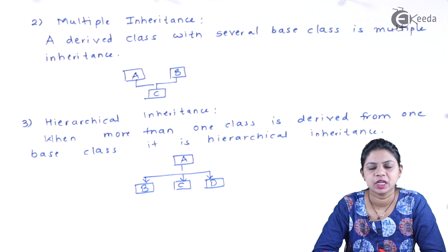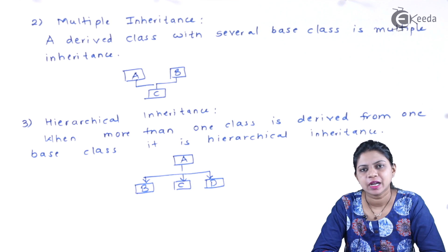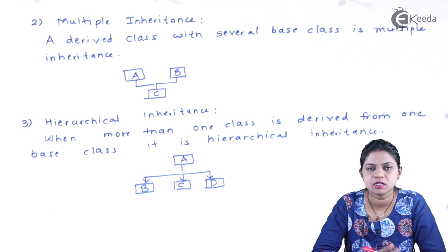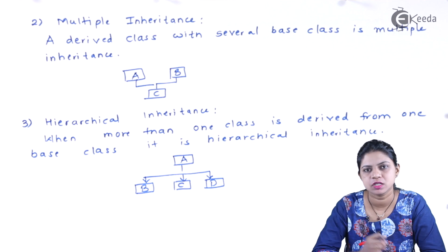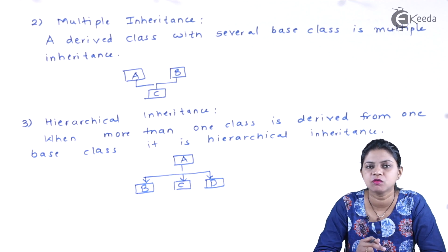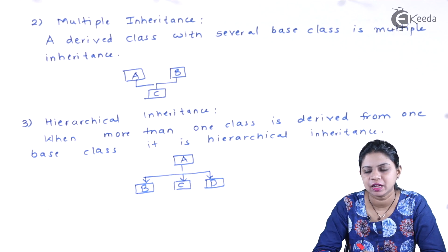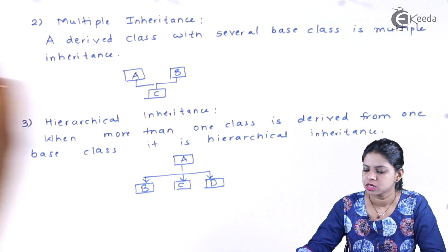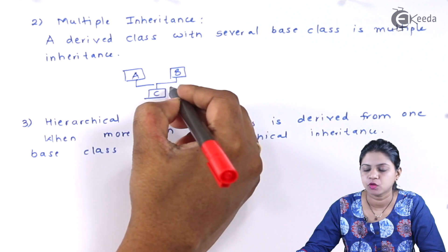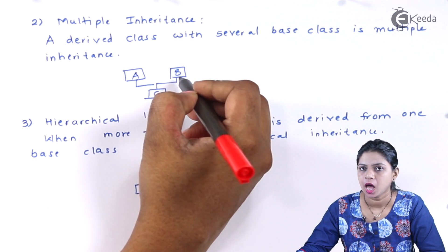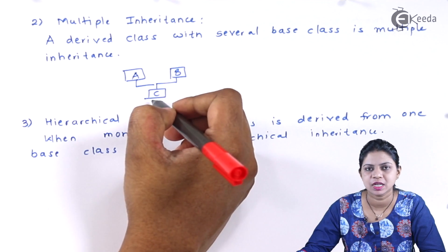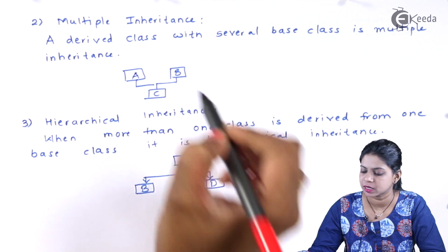Multiple inheritance: a derived class with several base classes is called multiple inheritance. In multiple inheritance, you will have more than one base class and only one derived class. Here I have multiple base classes whereas only a single derived class.